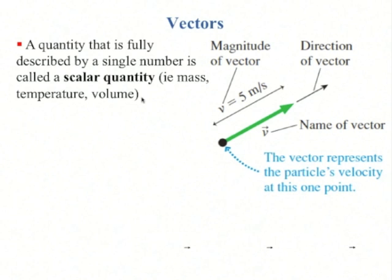A quantity that is described by a single number is called a scalar quantity, and we're very used to these, such as just the number 5, and we know that 5 plus 5 equals 10.